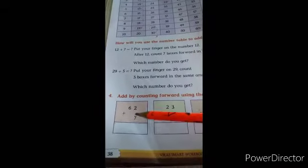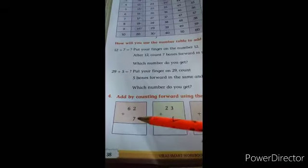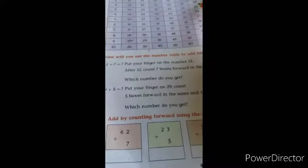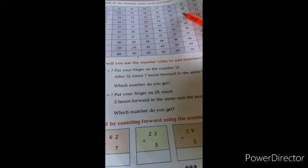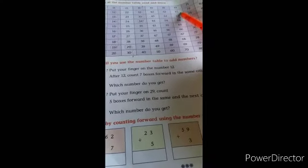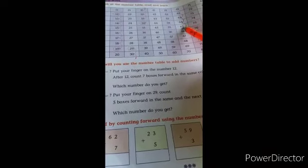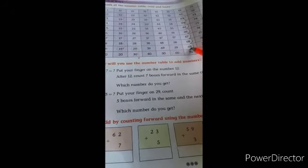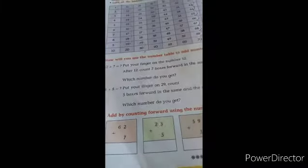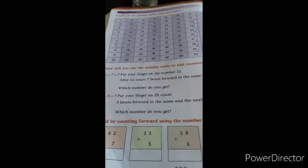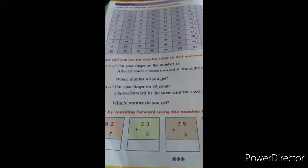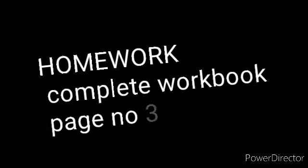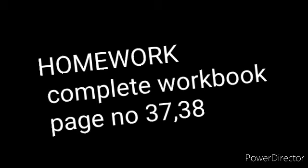Now 62 plus 7. Search here children 62 number. You have to search and go front how many steps? 7. See here 1, 2, 3, 4, 5, 6 and 7. So answer become here 69. Like that way children, you have to complete workbook page number 37 and 38. Now children, it's time of homework, complete workbook page number 37 and 38.